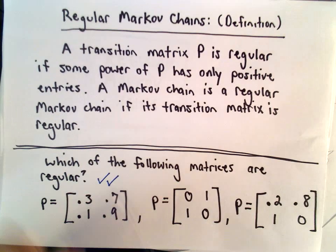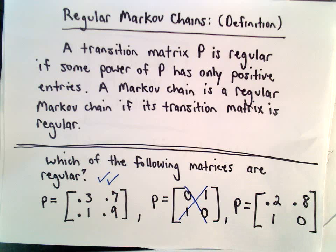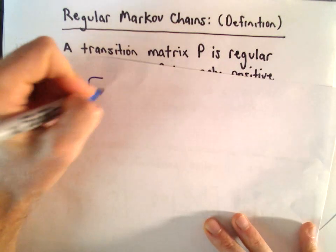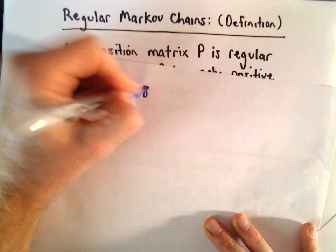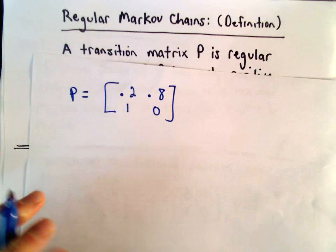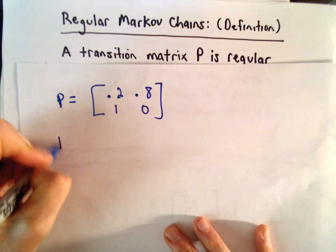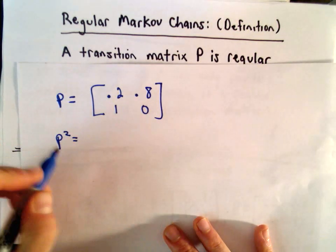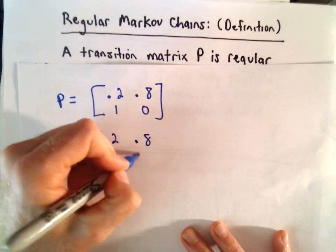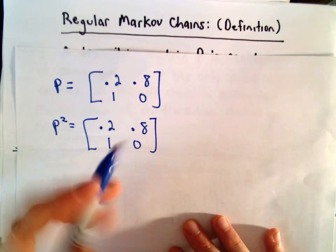Let's look at our last example. Our third matrix has entries 0.2, 0.8, 1, and 0. Right off the bat it doesn't look regular because not all entries are positive. But let's compute P squared.